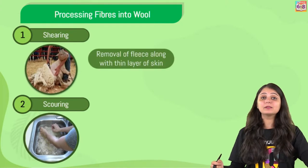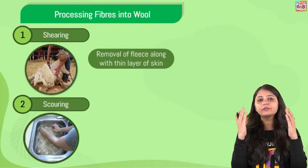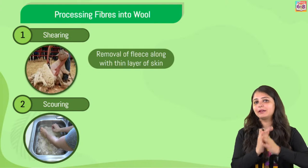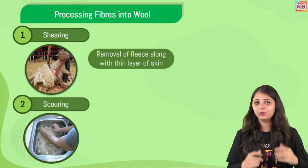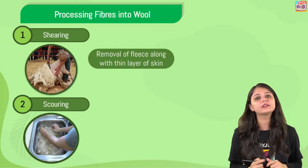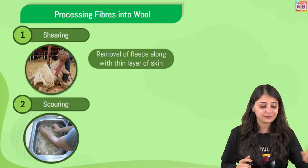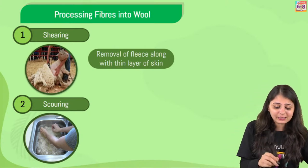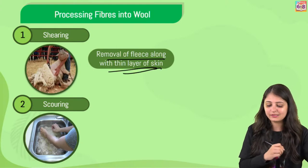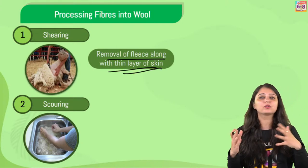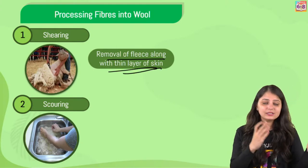Coming to the processing of fibers into wool. The first step - many of you were getting confused between rearing and shearing. Now it's time to understand what shearing is. Shearing is the removal of the fleece along with a thin layer of skin - basically shaving off hair. That is what shearing is, and this is not going to hurt the animals.